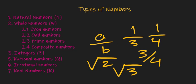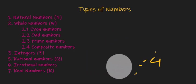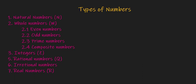The next type of number is real number. To understand real numbers, what we have to understand is the number line. So if we draw a number line like this.